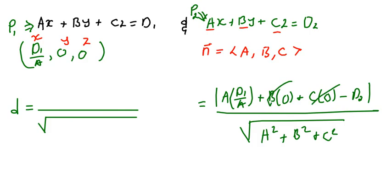So on top, this is going to be 0 and that's going to be 0. So a multiplied by d1 over a is just going to be d1. Then here you have a minus d2. On the denominator, you have a squared plus b squared plus c squared. And this is what we are looking for.